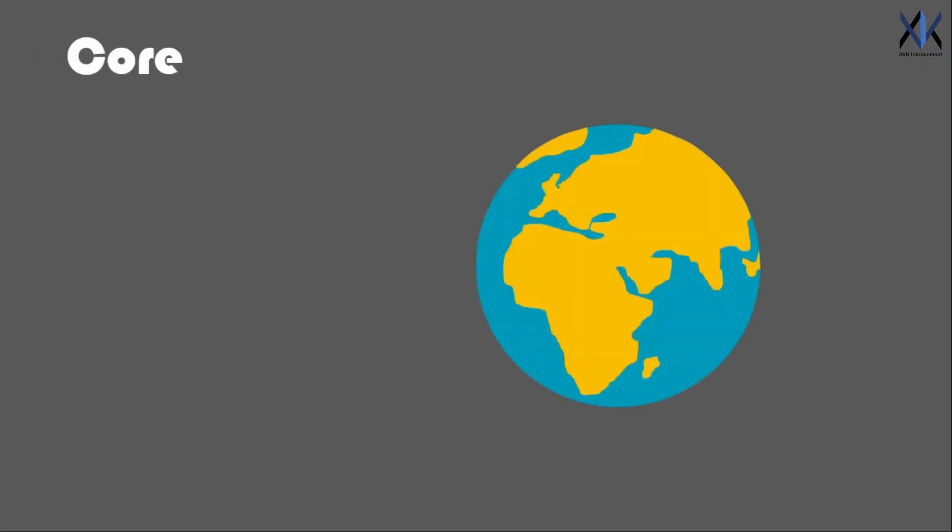Now Earth's core will be still rotating even though its surface has stopped. This will result in massive friction between the tectonic plates resulting in violent earthquakes and volcanic eruptions.